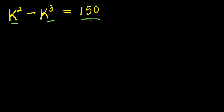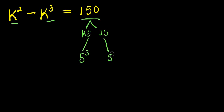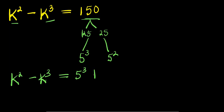Let's start by splitting 150 into two parts: 125 and 25. With 125 we can write 5 to the power of 3, and with 25 we can write 5 to the power of 2. So that means k squared minus k cubed equals 5 cubed plus 5 squared.